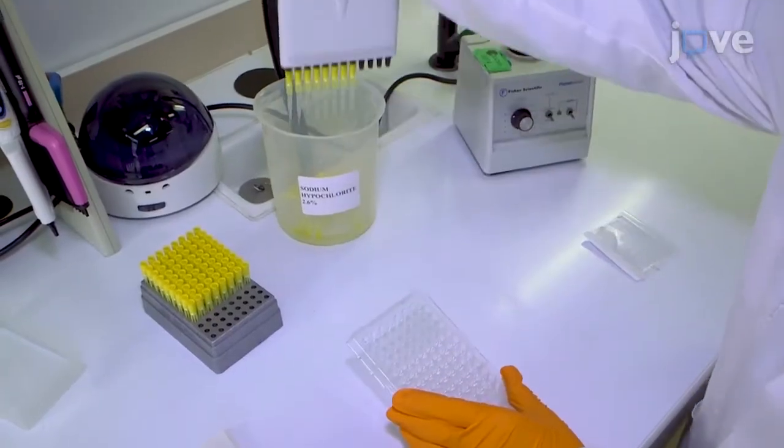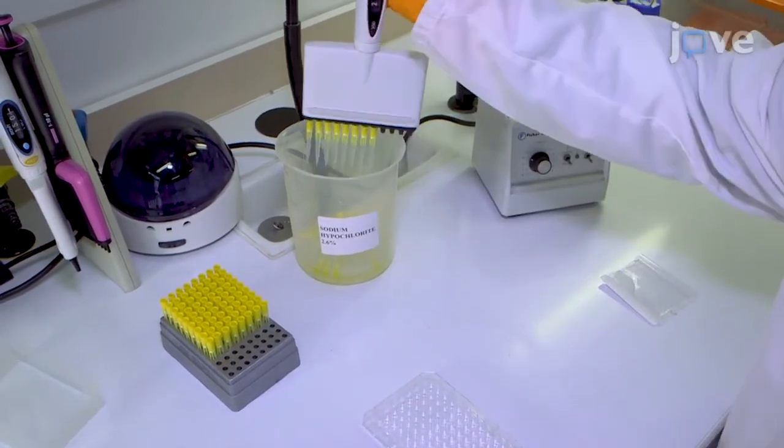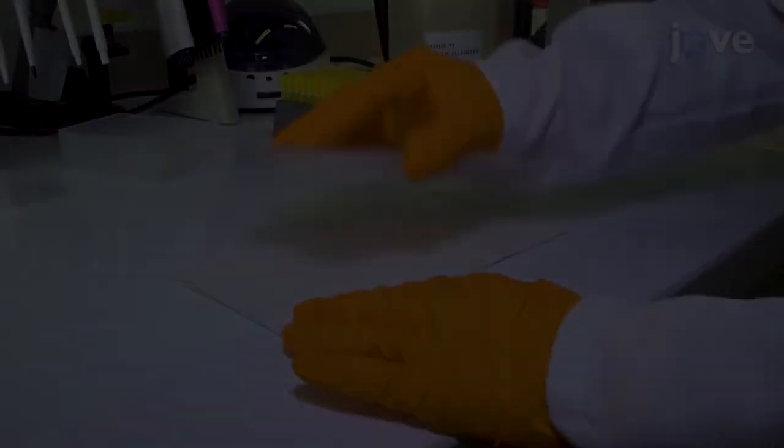Then, carefully aspirate and transfer the well content into a recipient containing a solution of 2.6% sodium hypochlorite. Invert the microplate.